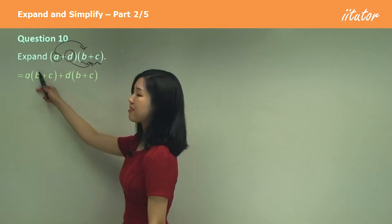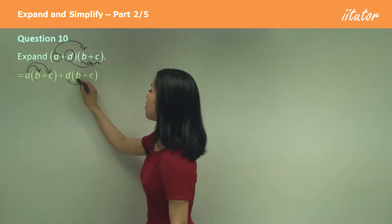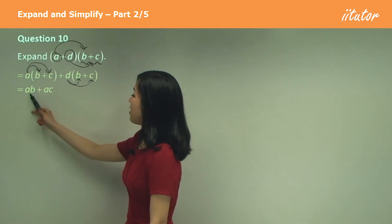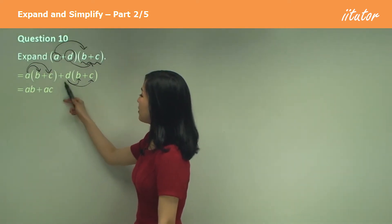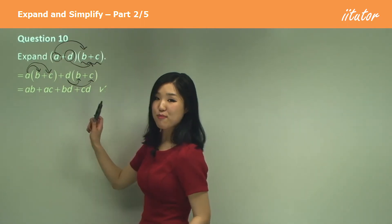So now you go ahead and expand it out. So then you do A times B and A times C. And then D times B and B times C, like you always do. So AB, AC plus DB or BD because I like to keep it in that alphabetical order.